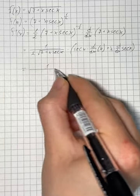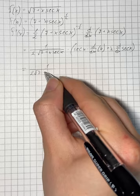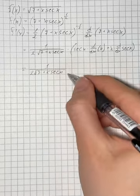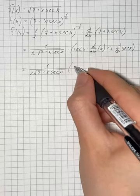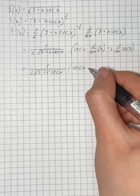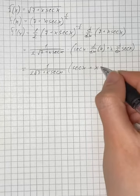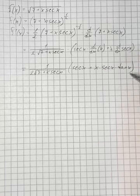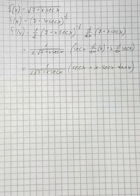This equals 1 over 2√(7 + x·sec x), and in the brackets we have sec x—derivative of x equals 1—plus x·sec x·tan x. That's going to be our answer.